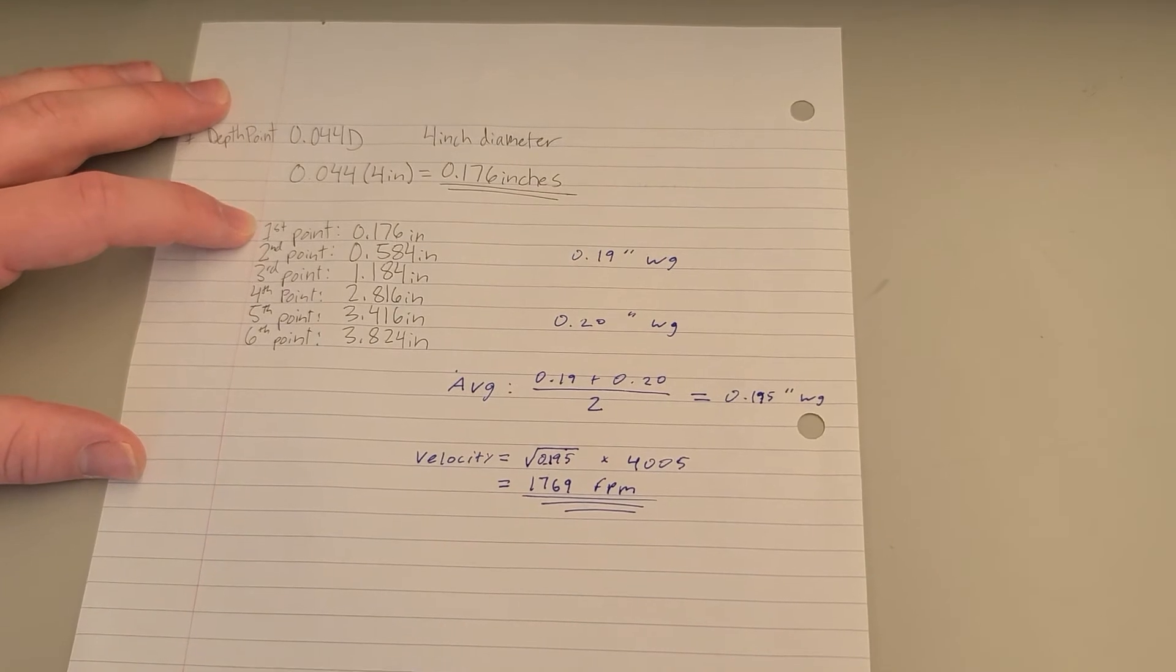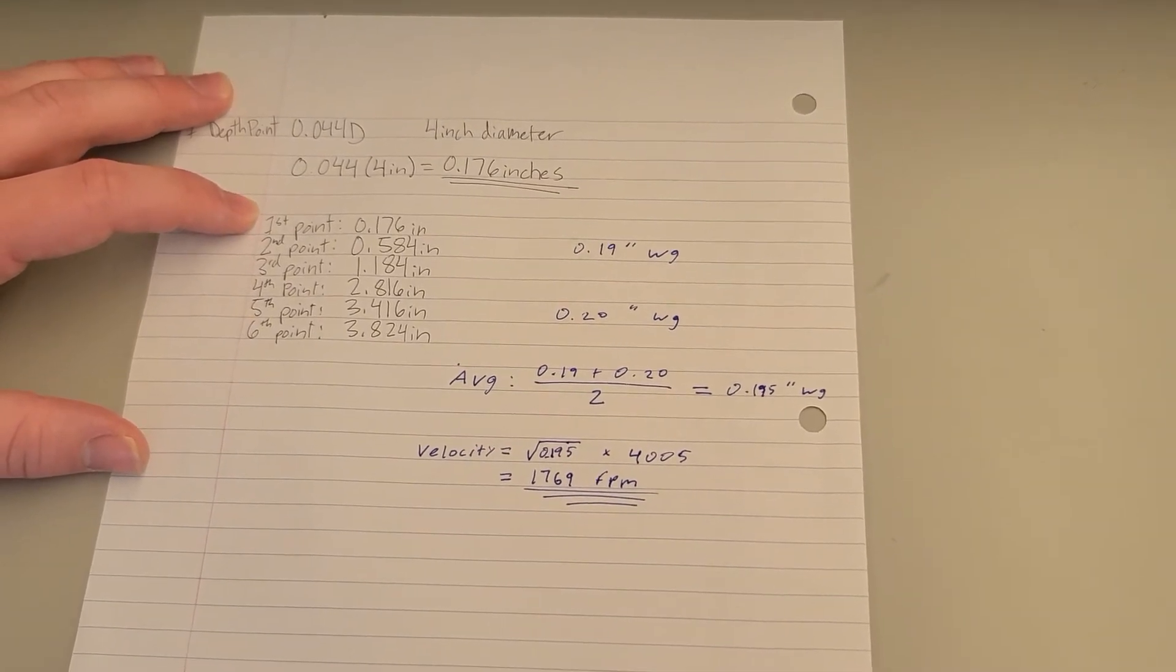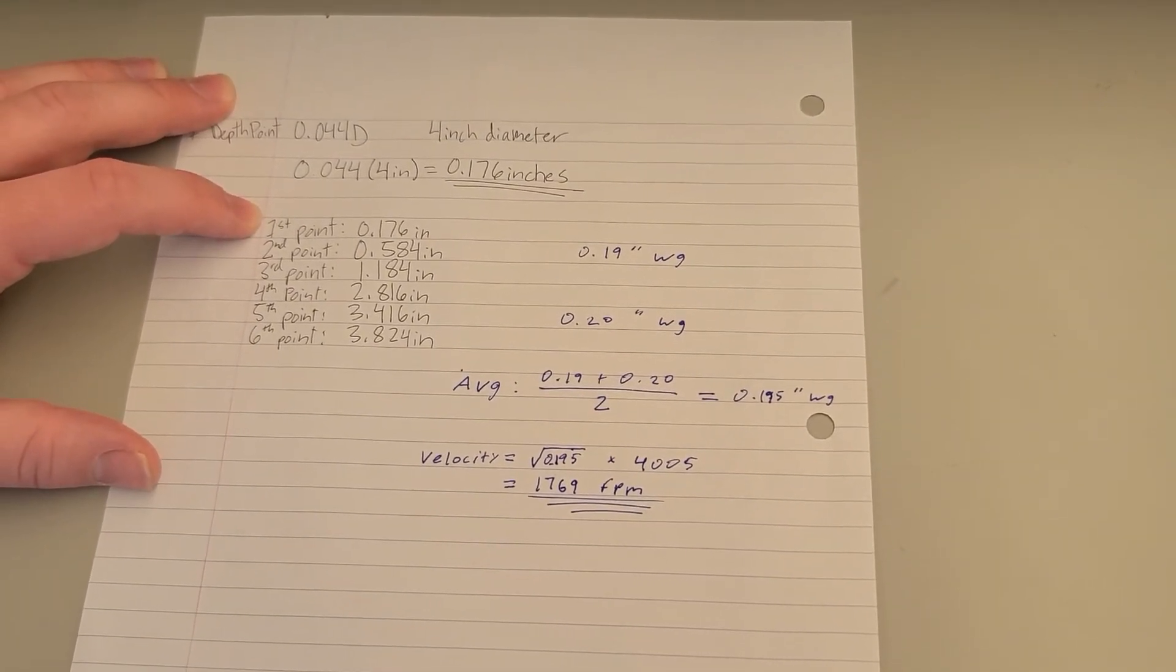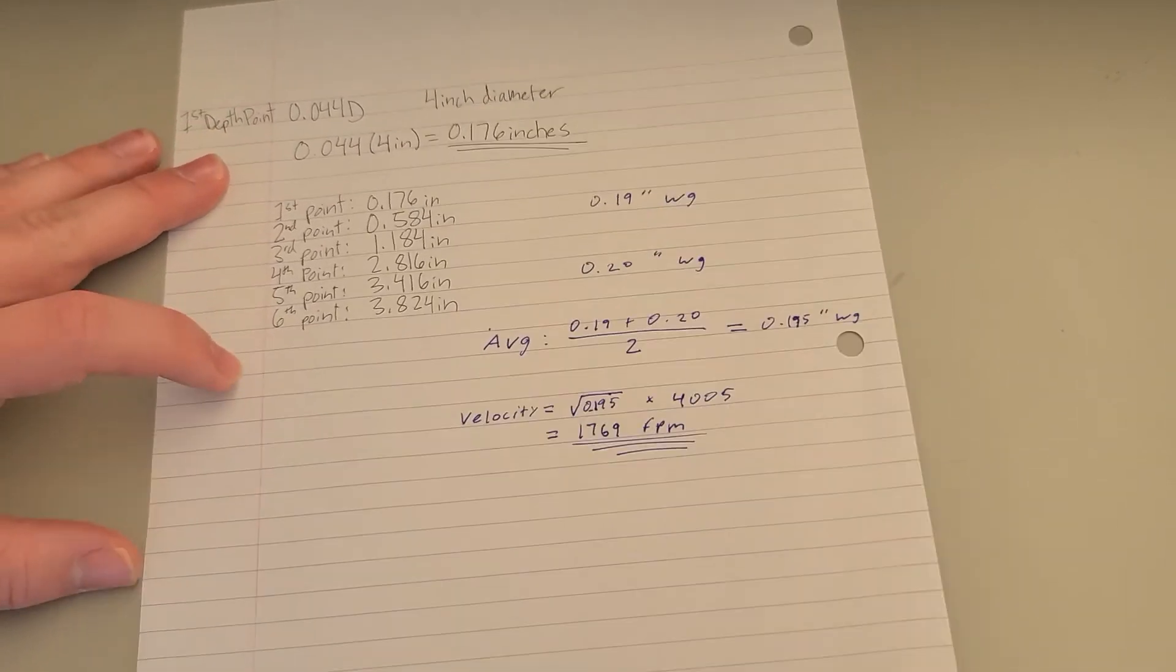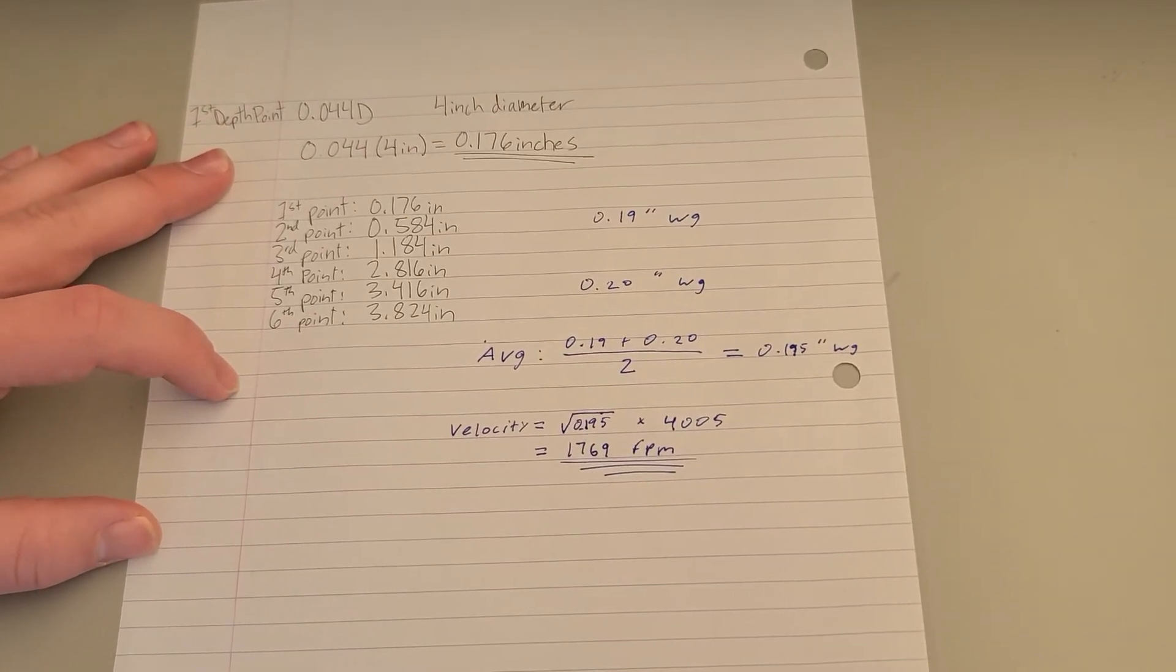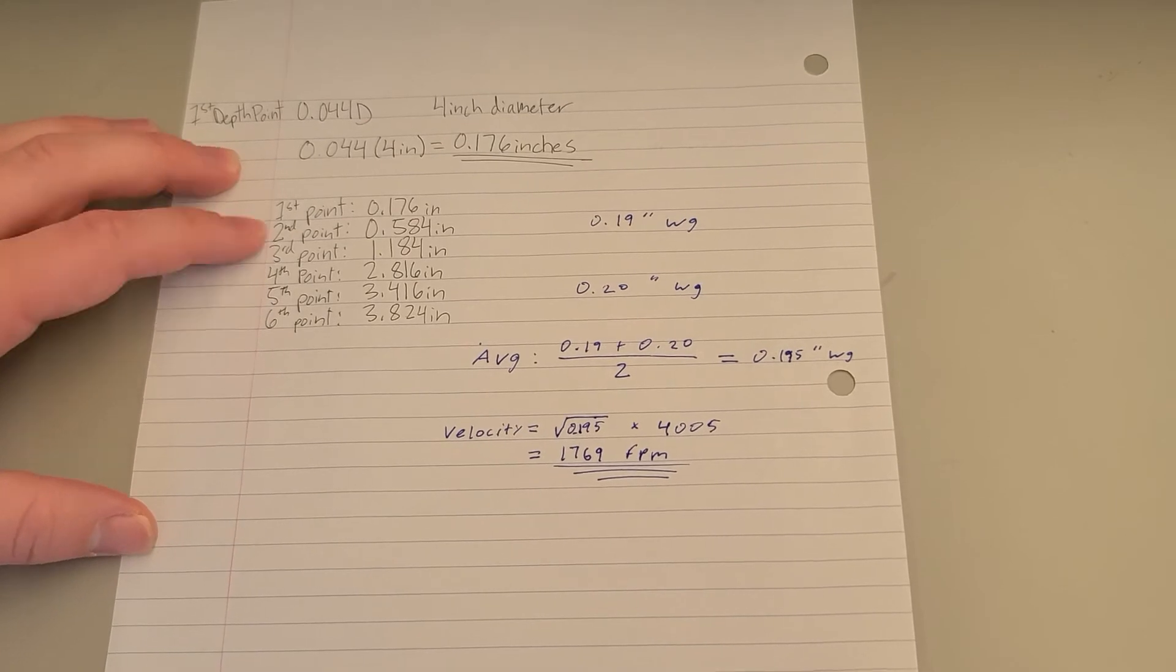Remember that in an actual duct traverse, you would calculate your average from six points of a duct traverse, as well as another six points taken at a 90-degree angle to those original six.